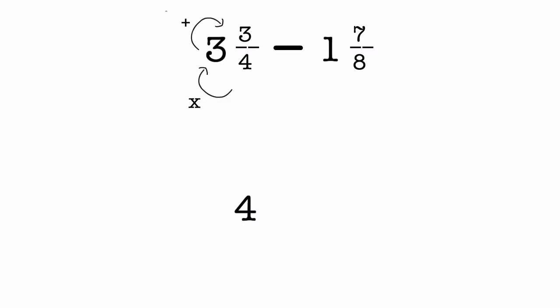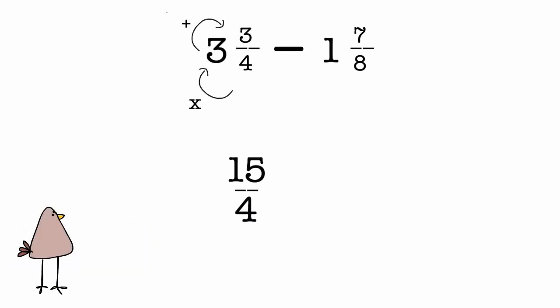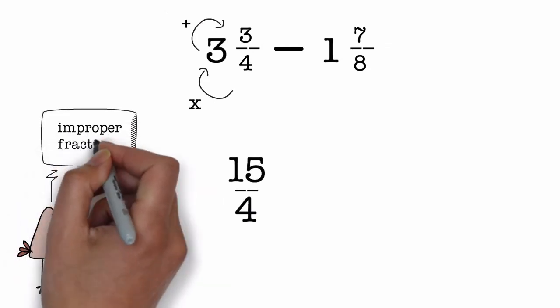So the first operation gives us 12 and now that we have 12 we add 3 and that gives us 15. So our fraction is 15/4 and since the numerator is larger than the denominator we can be more specific and say it is an improper fraction.